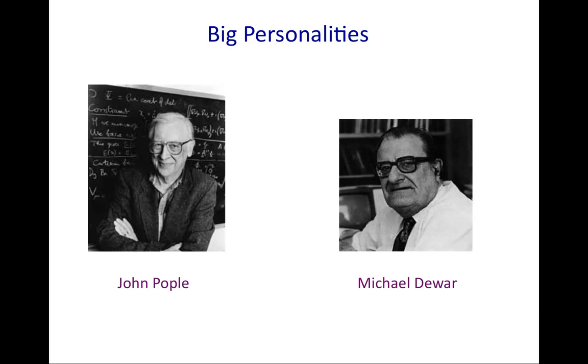I'd like to start with a bit of history and talk about two big personalities in computational chemistry, renowned within the field of semi-empirical molecular orbital theory. Each of these individuals, John Pople shown on the left and Michael Dewar shown on the right, were British chemists originally who moved from the United Kingdom to the United States. John Pople came to Carnegie Mellon University, where he spent most of his professional career, and ultimately was an emeritus faculty member at Northwestern until his death.